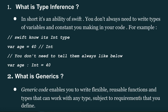What is type inference in Swift? It's the ability of Swift where you don't always need to write the types of variables and constants you declare in your code. For example, Swift infers the int type: `var x = 40`. You don't need to explicitly write `var x: Int = 40`. Swift knows it's an int type by default — this is called type inference.